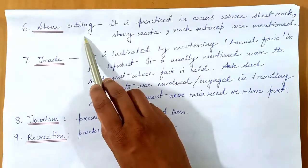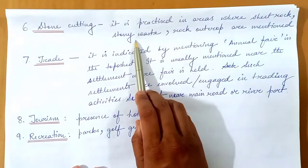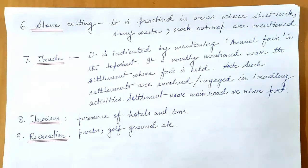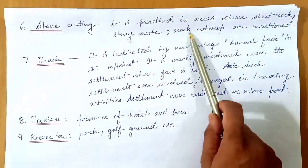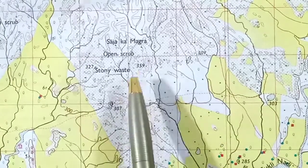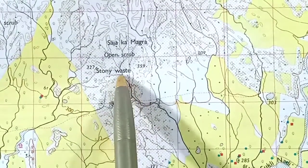Stone quarrying or stone cutting is practiced in areas where sheet rock, stony waste, or rock outcrop are mentioned. These are barren land areas where stones are found on the surface, arranged in different ways. In the case of sheet rock, it is horizontally arranged, whereas in the case of rock outcrop, parts of weathered rocks are popping out on the surface. Here we can see stony waste in a topographical map — a barren area covered with stones.